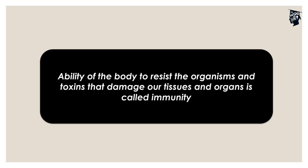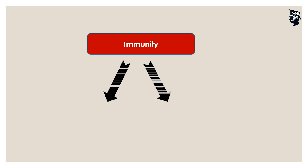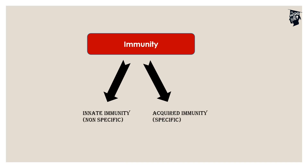First of all, let's discuss what is immunity. Immunity is the ability of the body to resist the organisms and toxins that damage our tissues and organs. Innate immunity is present from the time of birth itself, whereas acquired immunity is acquired during our lifetime.